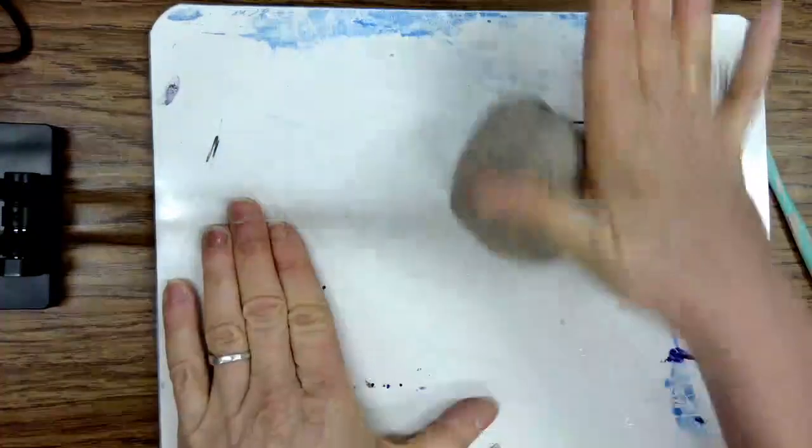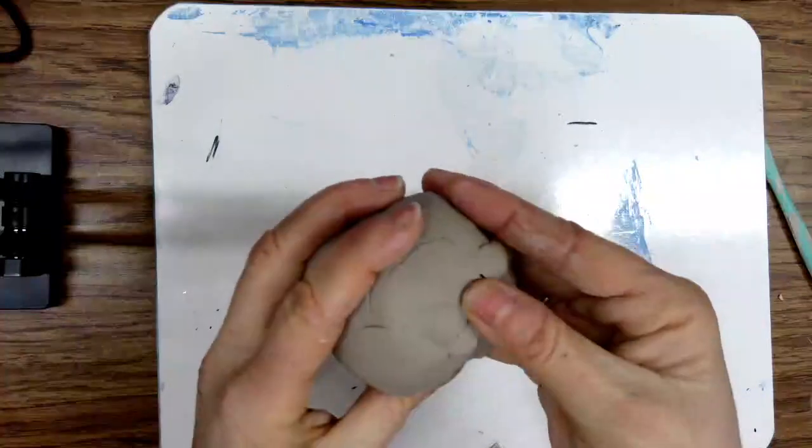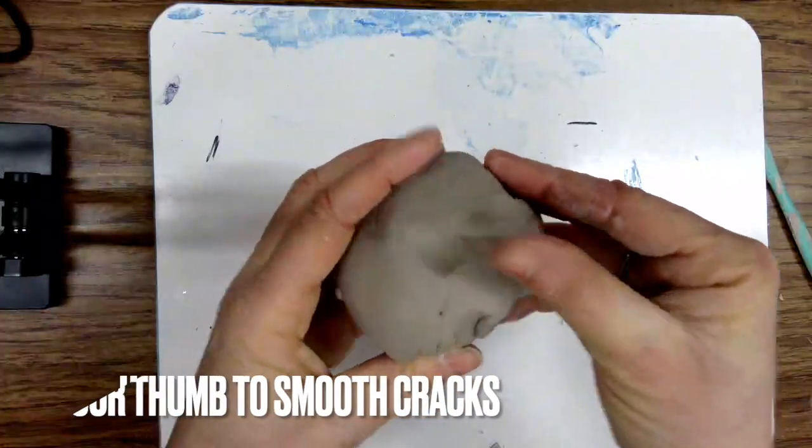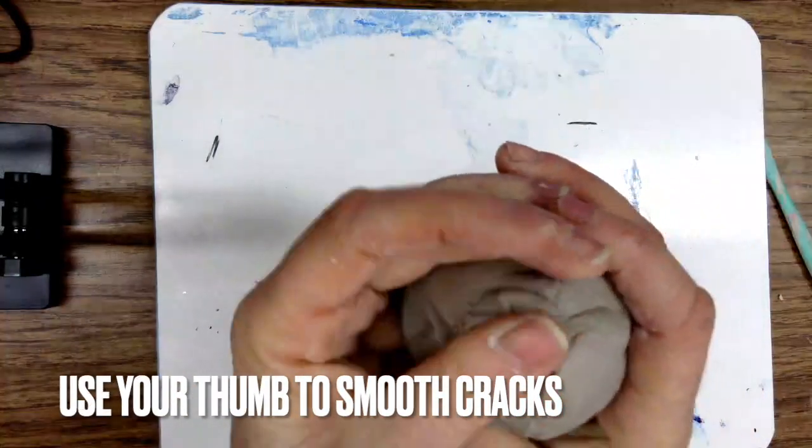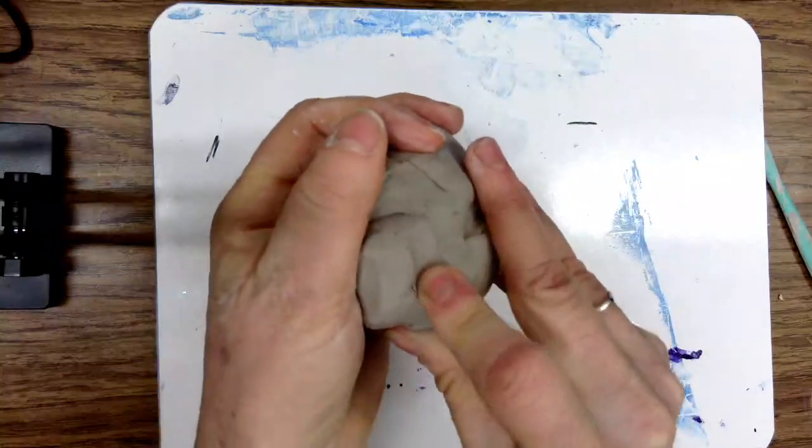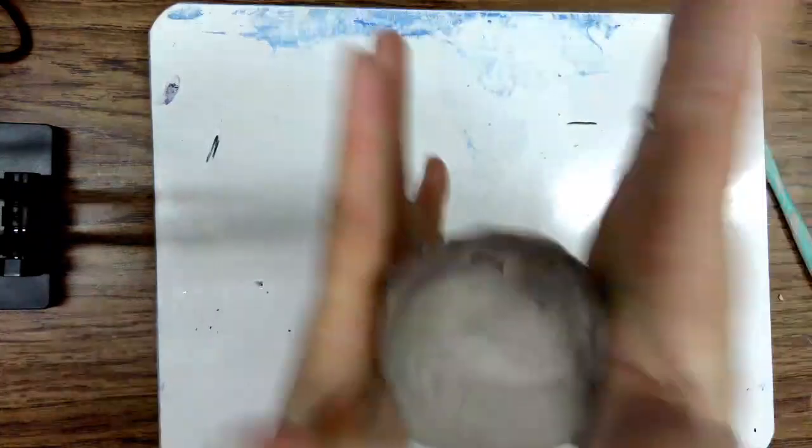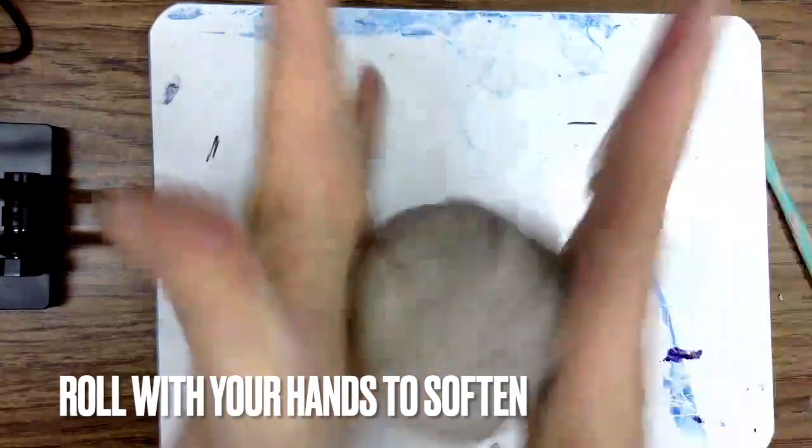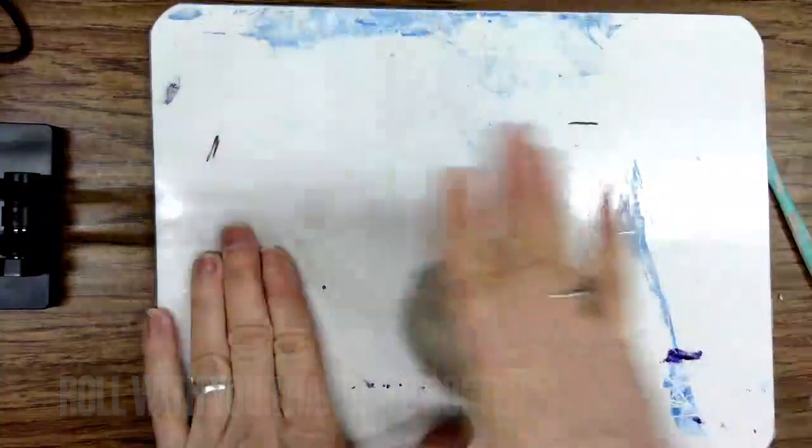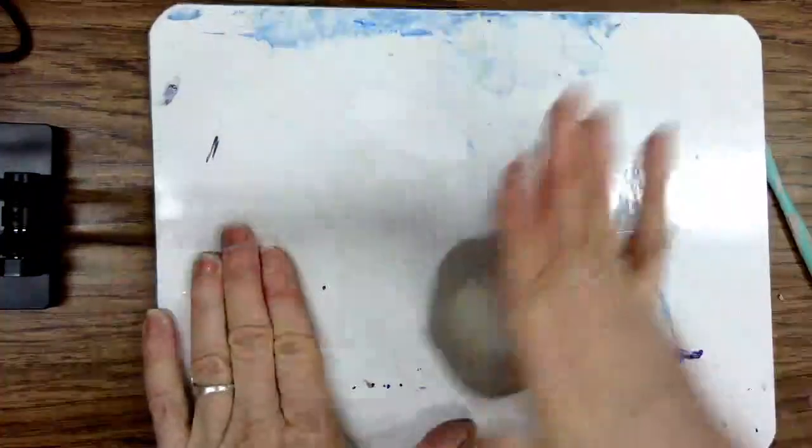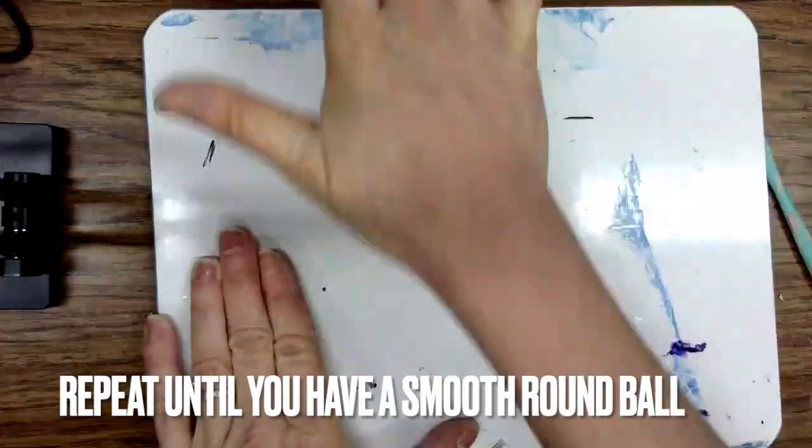You can roll it on the table to smooth out the clay. Use your thumb and fingers to smooth out cracks as you're rolling the clay. Roll it between your hands to soften it up even more. Repeat this process.